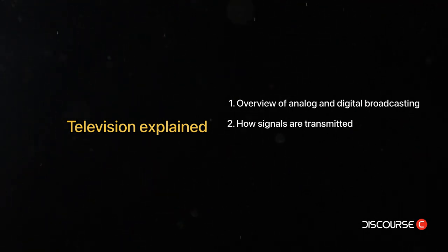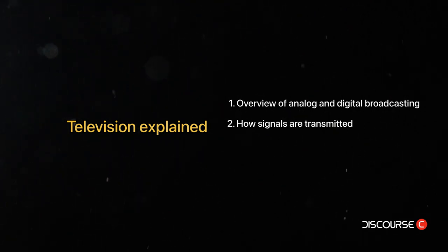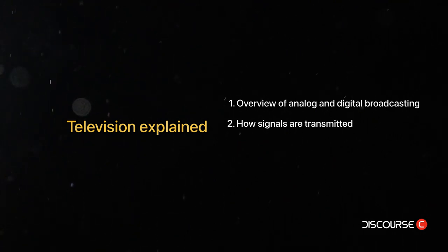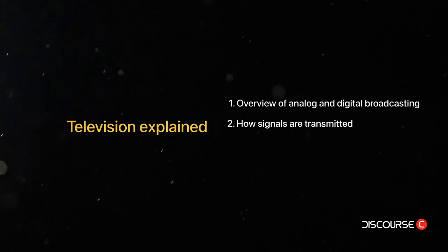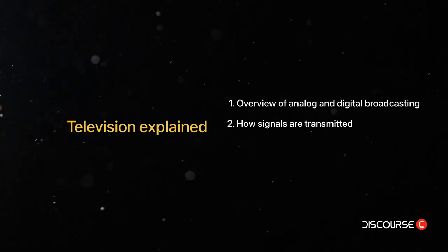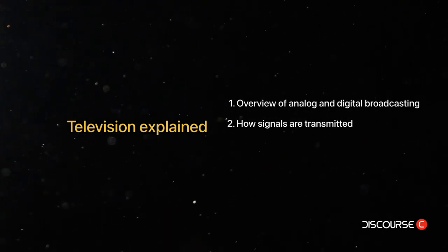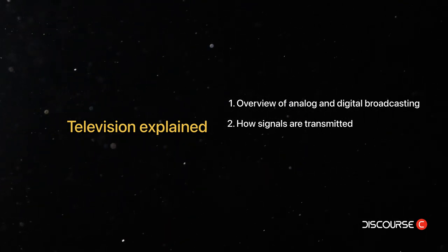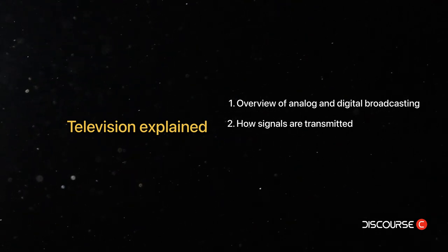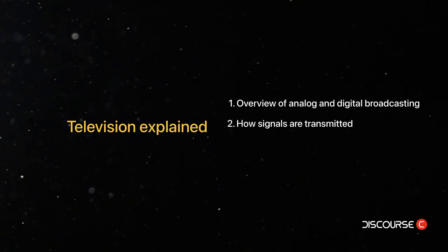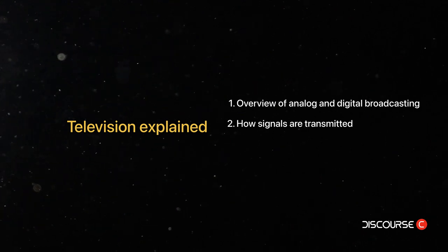In recent years, the rise of internet-based television services, such as streaming video, has changed the way television signals are transmitted to the television set. These services use the internet to transmit the signal from the source to the subscriber's home, where it is then processed by a device such as a smart TV, streaming media player, or gaming console. The signal is then displayed on the television set, allowing the subscriber to watch television programming without the need for a traditional cable or satellite television service.